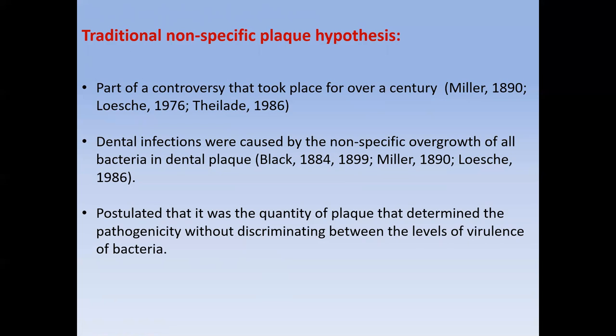The first one — the traditional non-specific plaque hypothesis — was part of a controversy that took place for over a century, from Miller in 1890 to Theilade in 1986. It was first applied to describe the effect of plaque on dental caries. Dental infections were described as caused by the non-specific overgrowth of all bacteria in dental plaque. So it's about quantity — whenever we have a large amount of dental plaque, we have broader scales of dental infection in the involved area.